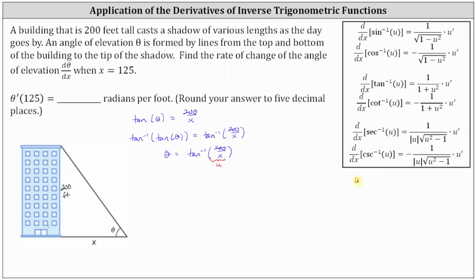So if u is equal to 200 divided by x, or 200 times x to the power of negative 1, we need to find u prime when applying the chain rule. u prime, or du dx, is equal to the derivative of 200 x to the negative 1 with respect to x, which is negative 200 times x to the power of negative 2, which we can also write as negative 200 divided by x squared.